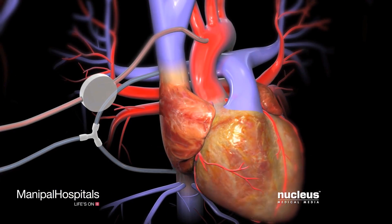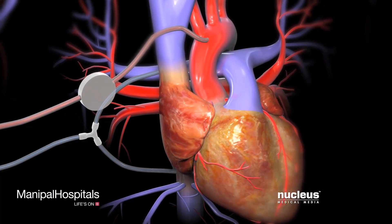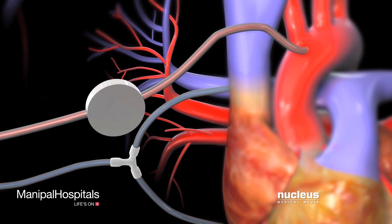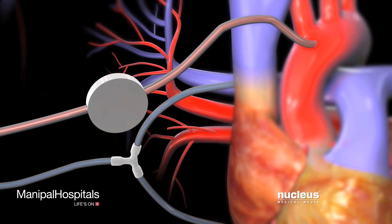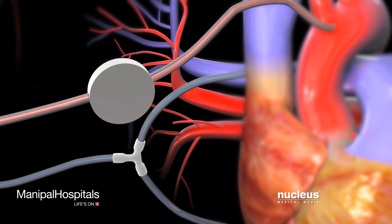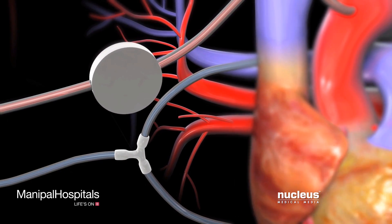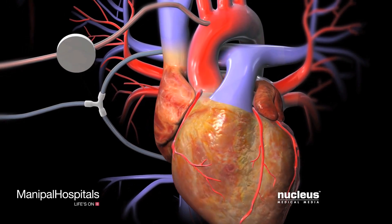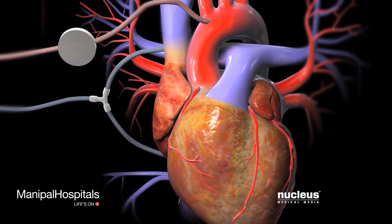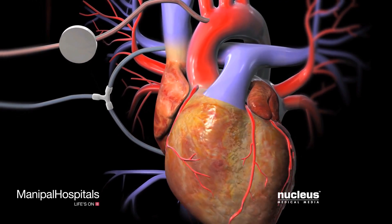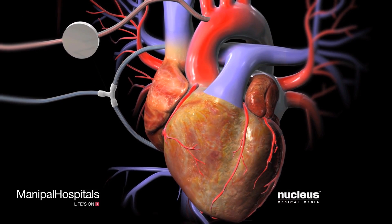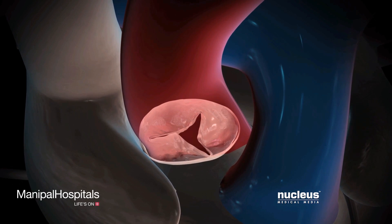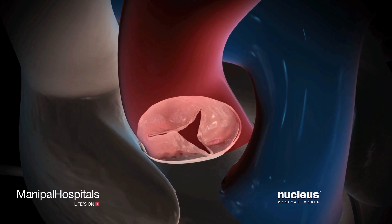At this point, your heart will be connected to a heart-lung machine. Tubes are used to reroute your blood into this machine, which takes over the functions of the heart and lungs during the operation. Once the heart-lung machine has taken over, your heart will be temporarily stopped and the blood inside removed. This keeps the aortic valve still and allows your surgeon to see it.